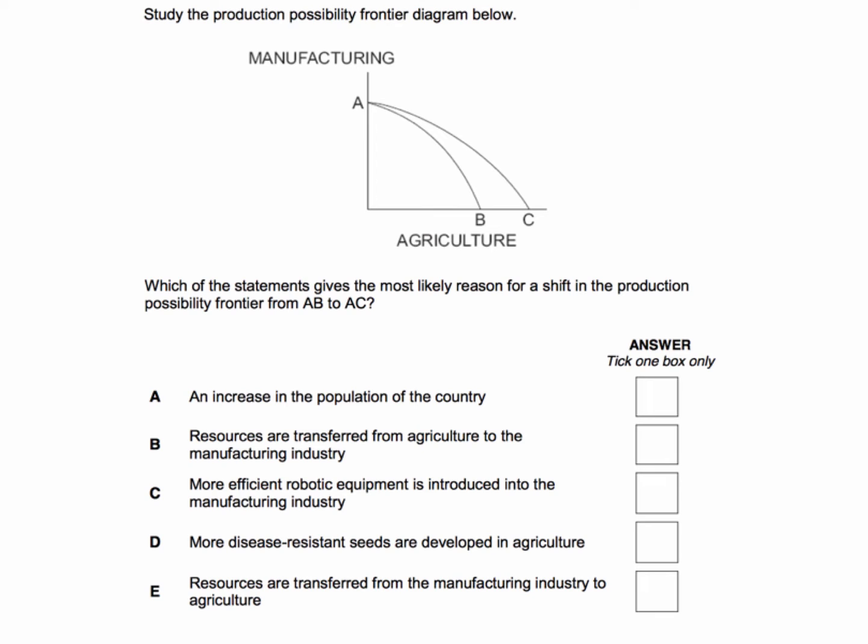Before you look at the answers, think about what's happened. The production possibility curve has shifted outwards and we can now produce more agricultural goods than we could before, but there's been no increase in the production capabilities of manufacturing.